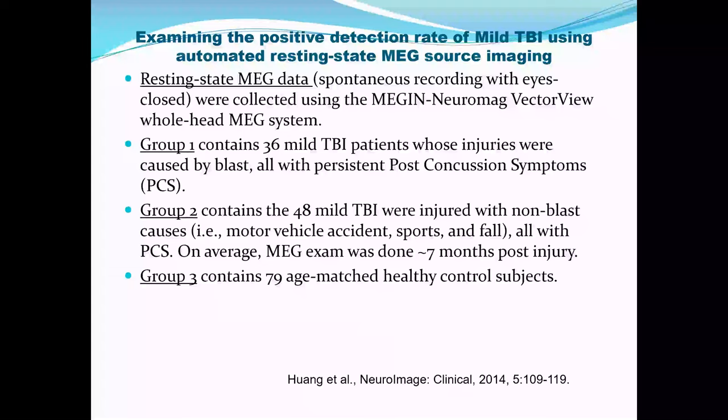Those are the people who actually need help, because they have difficulties going to school, at work, and with everyday life. Those are the ones we're targeting — mild TBI patients with ongoing symptoms in the chronic phase. We also had 79 patients in the healthy control group.